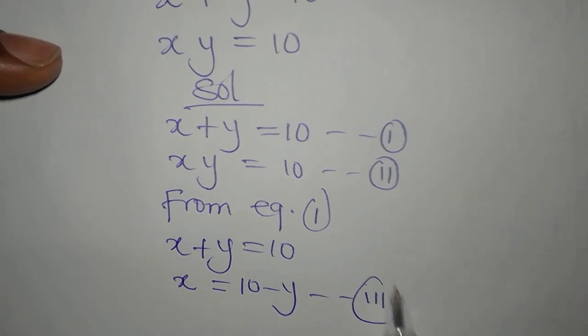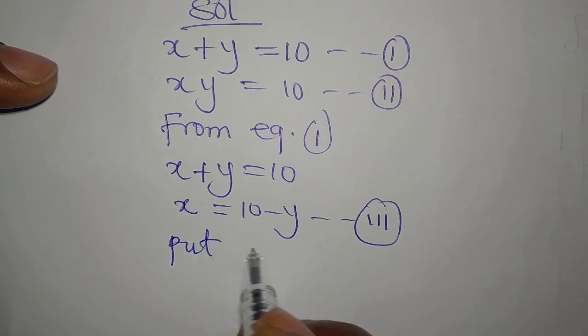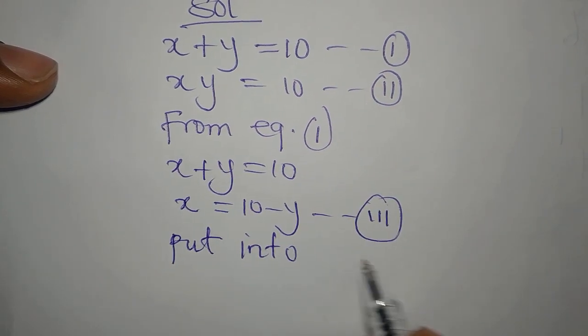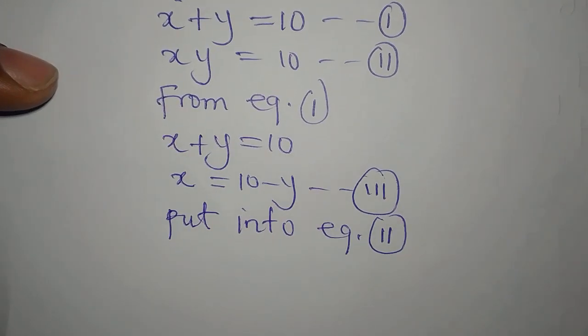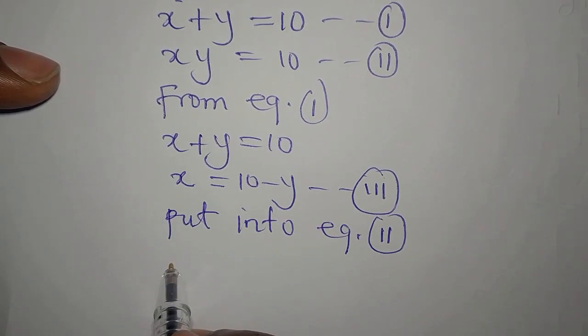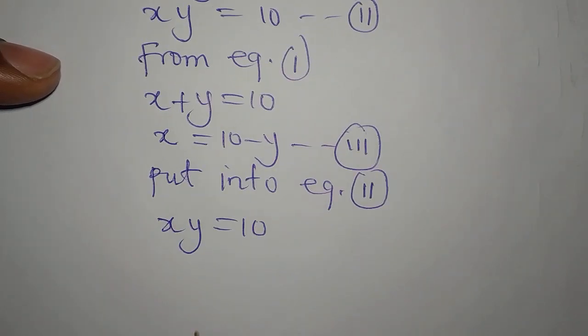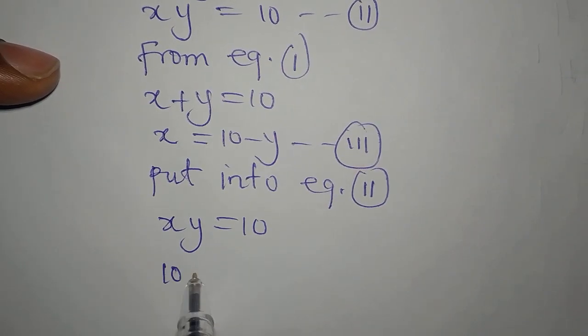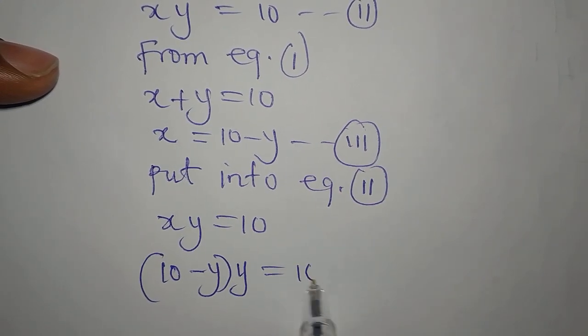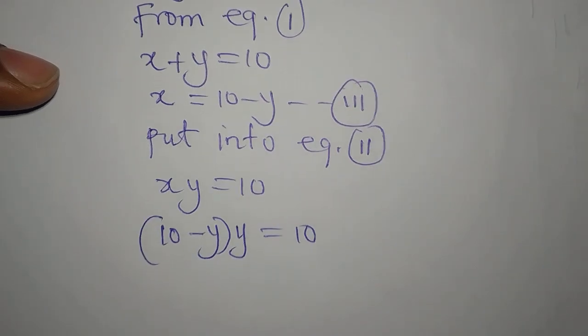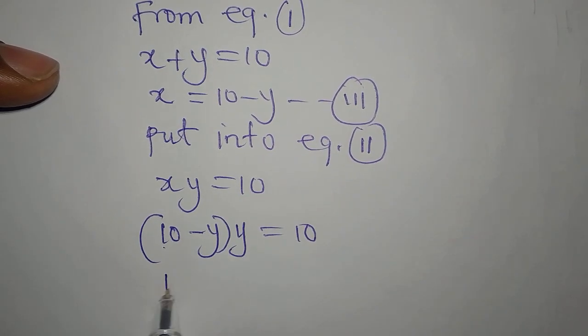Now put this into equation two. We will now have xy equals 10, which will now be 10 minus y, then we multiply by y. This is equal to 10. Then we open the bracket, 10 times y, that is 10y.